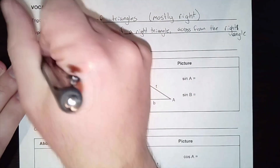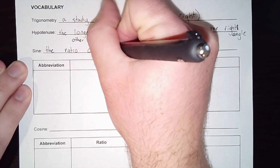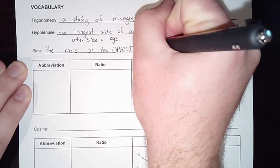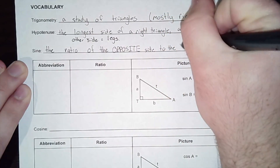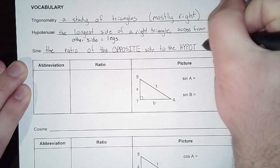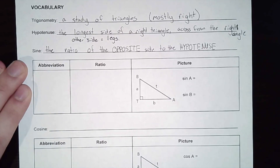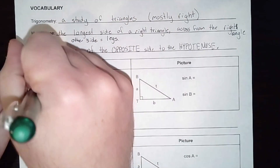Sine is specifically the ratio of the opposite side to the hypotenuse — opposite over hypotenuse. There's an abbreviation for sine; all three functions have three-letter abbreviations. Sine is abbreviated as sin — we still say 'sine,' not 'sin.' You will always have an angle attached with that sine, represented by the symbol theta, which is a Greek letter used to represent the angle.